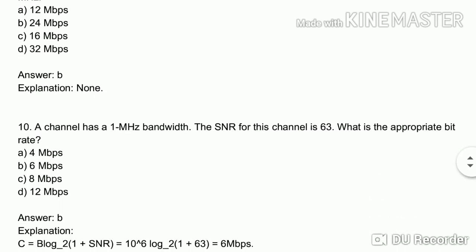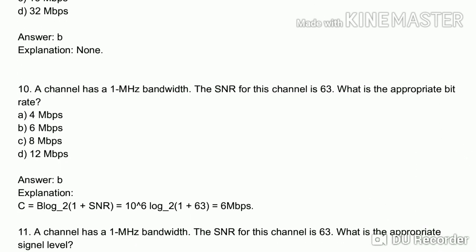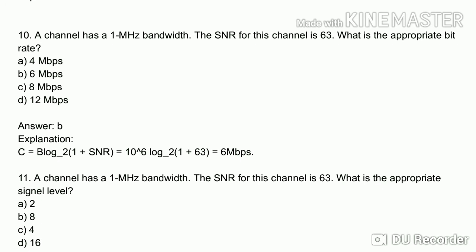Tenth question: the channel has 1 Mbps bandwidth and the SNR for this channel is 63. What is the appropriate bit rate? Since we have SNR, this is a noisy channel problem, so we apply Shannon's theorem: C = B × log₂(1 + SNR) = 1 Mbps × log₂(1 + 63). The answer is option B, 6 Mbps.